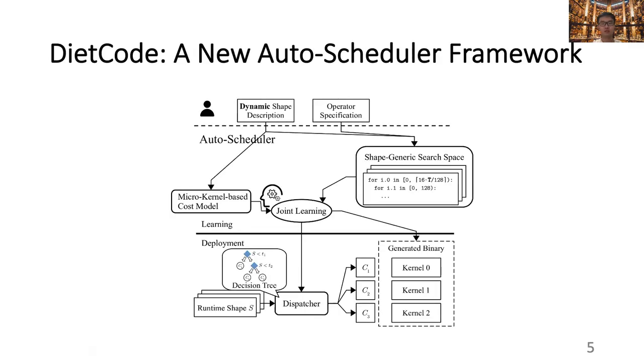To address those challenges, we propose DietCode, a new auto-scheduler framework that efficiently supports dynamic shape workloads. Due to the time limitation, in this presentation we mainly focus on two key ideas or submodules of DietCode, namely the shape-generic search space and the micro-kernel-based cost model.